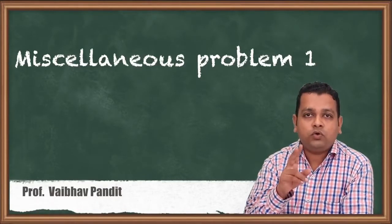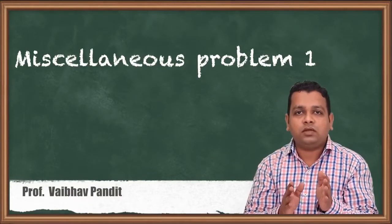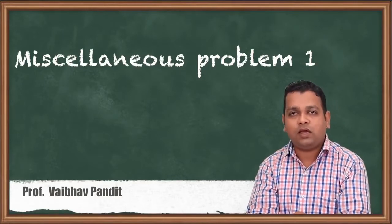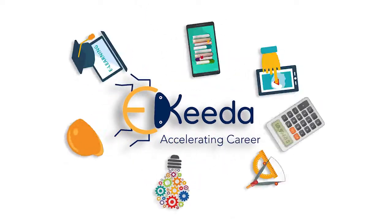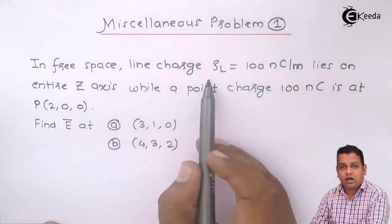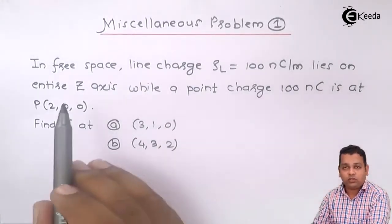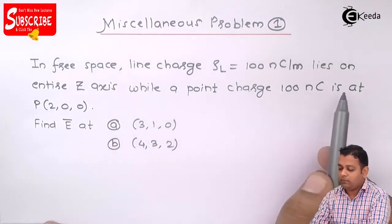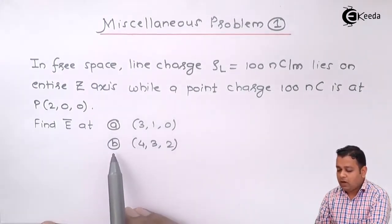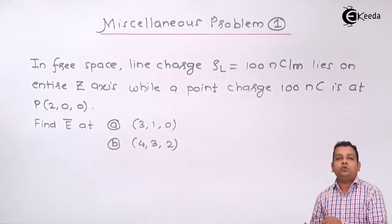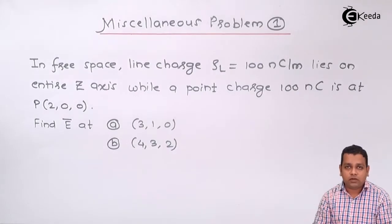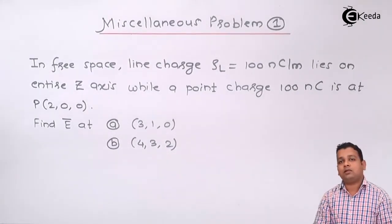In this miscellaneous problem, we have two types of charge configurations because of which we can measure the electric field intensity at the field point. The problem statement is: in free space, a line charge rho_L equal to 100 nanocoulombs per meter lies on the entire z-axis, while a point charge of 100 nanocoulombs is at point P(2,0,0). Find the electric field E bar at part A: location (3,1,0) and part B: location (4,3,2). So here we have two types of electric field sources — one line charge configuration and one point charge configuration.